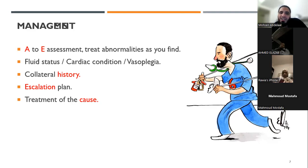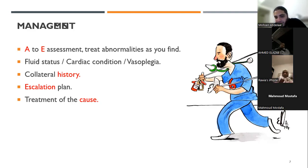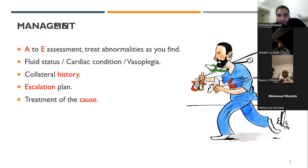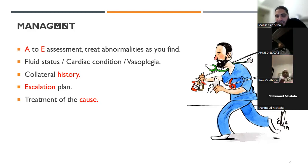One of the most important things in your assessment is the collateral history, because most of the time shock will be multifactorial and related to the patient's background or comorbidities. You should know the escalation plan — what you're going to do now to resuscitate, and what should come next. The main aim is to treat the cause.